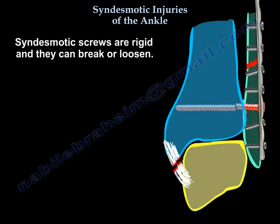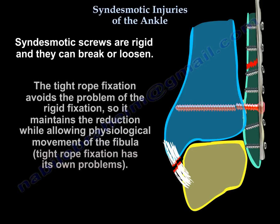The screw is rigid — it can break or it can loosen. The tight rope fixation avoids the problem of rigid fixation, so it maintains the reduction while allowing physiological movement of the fibula. But the tight rope has its own problems.